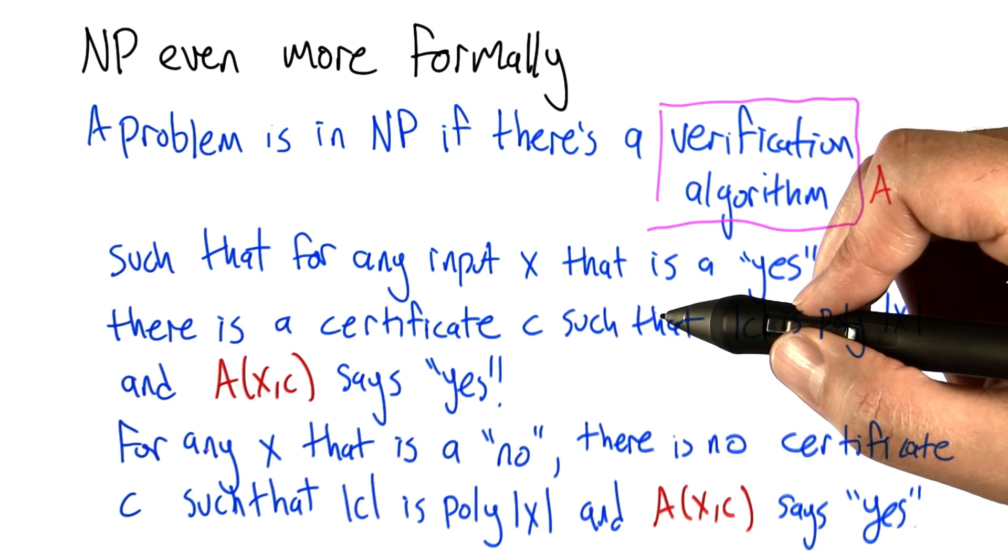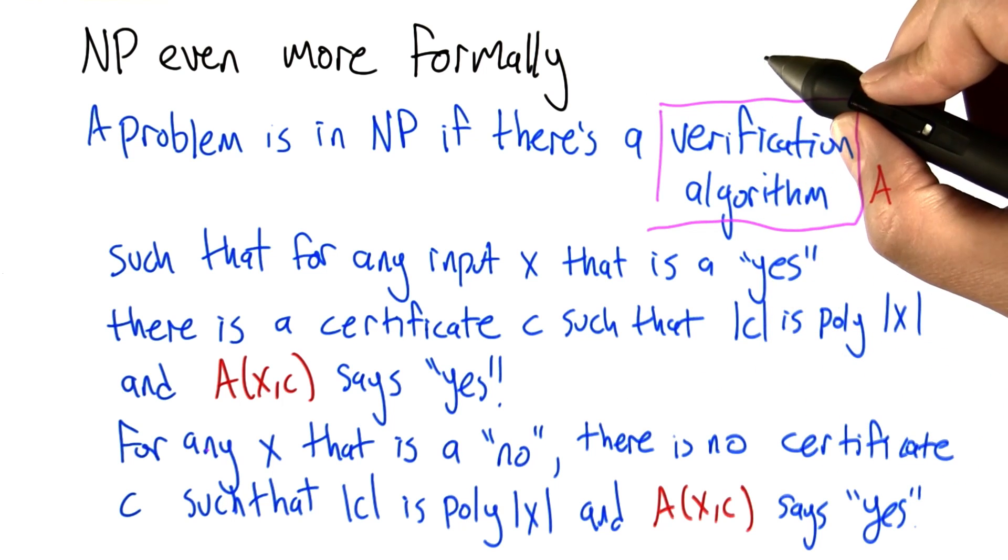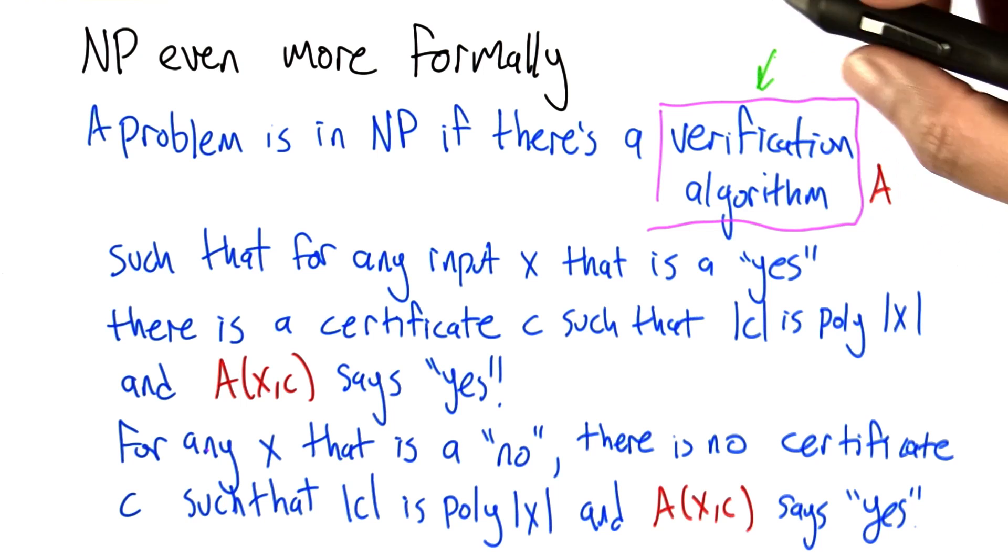Otherwise it will say no for all small certificates. For the Sudoku example, the verification algorithm takes the original Sudoku problem with things not filled in